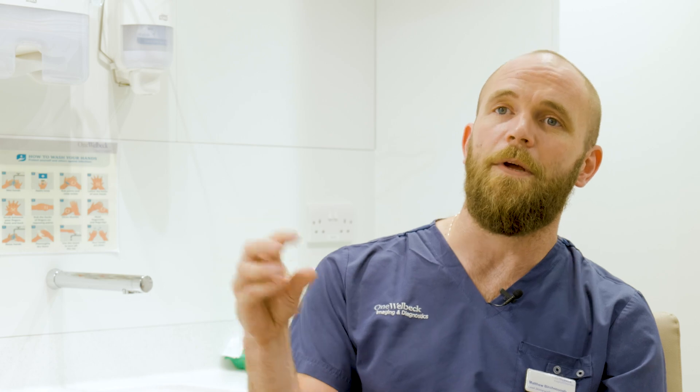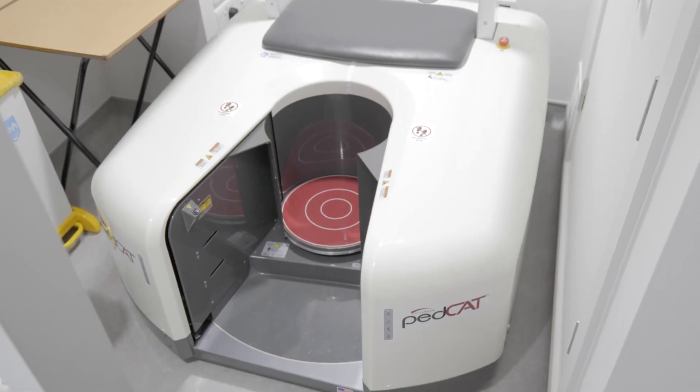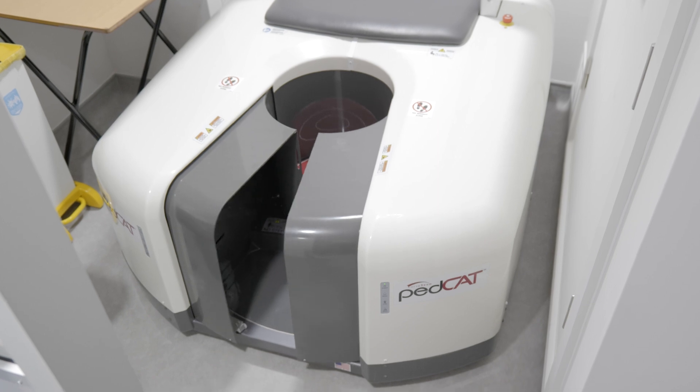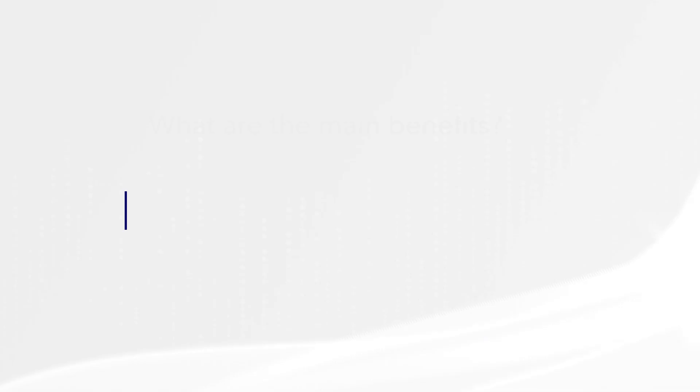With standing CT it uses something called a cone beam — a much narrower beam of x-rays — which helps reduce the radiation dose. The radiation dose is one of the big benefits, so you're getting a full assessment of the foot and ankle inclusive of reproduced x-ray images that you would normally have to take separately, for a much reduced dose.